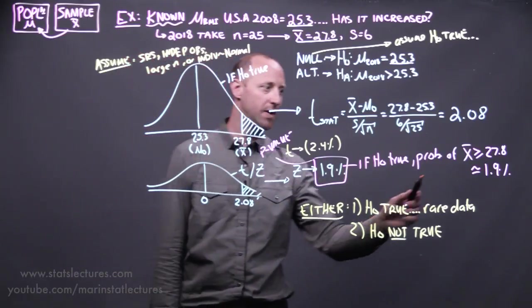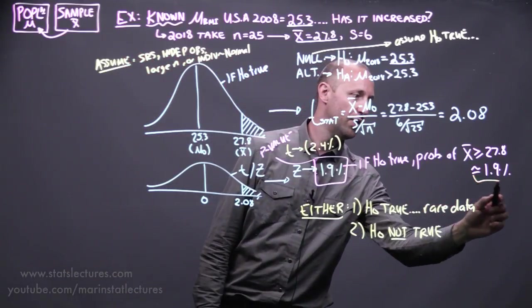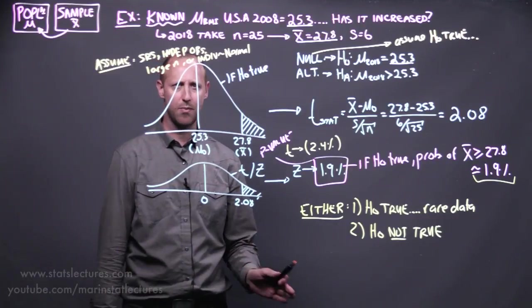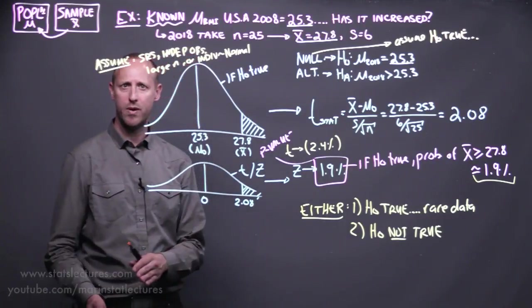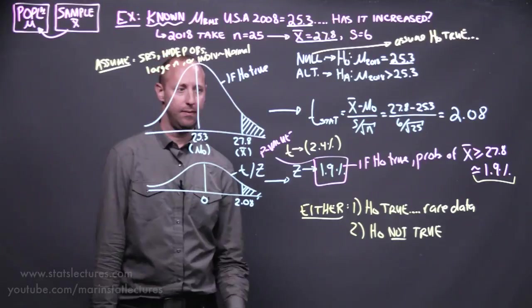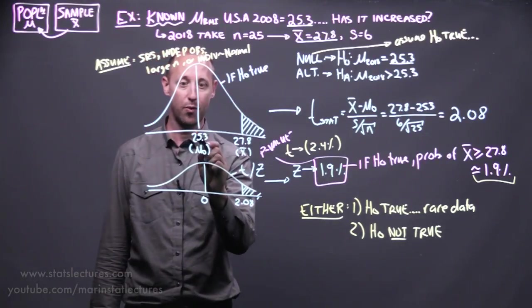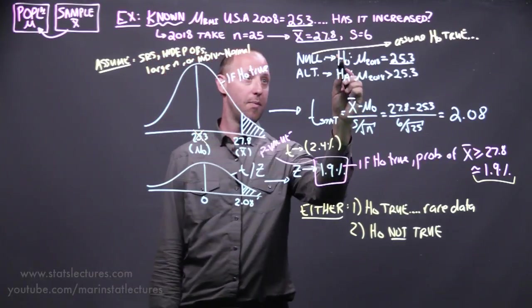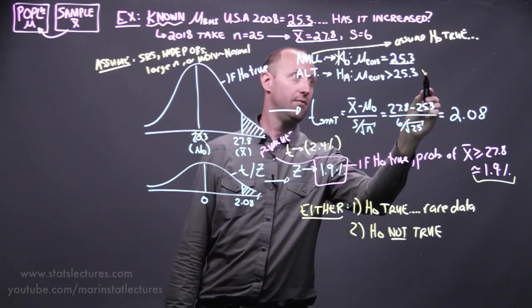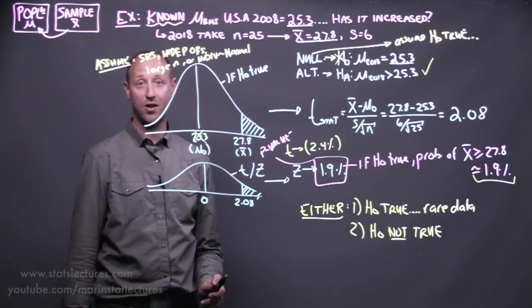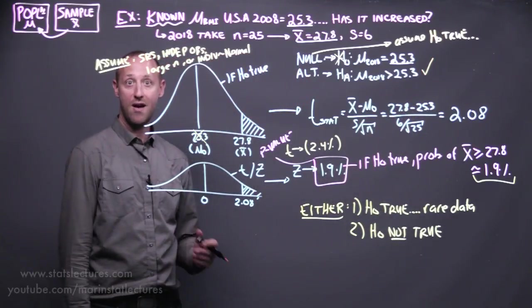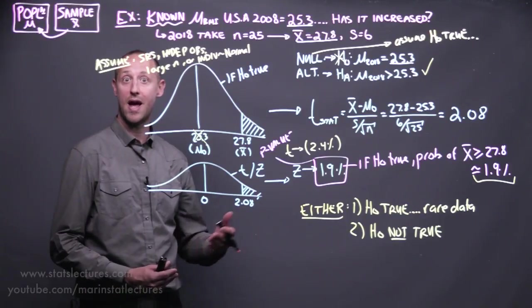The decision we're going to make, since our p-value here is small, we'll talk a bit more later about what we mean by small or large. But, because it's small, we're going to reject our null hypothesis, and say we have evidence to believe that the alternative is true. We have evidence to believe that mean BMI has increased.